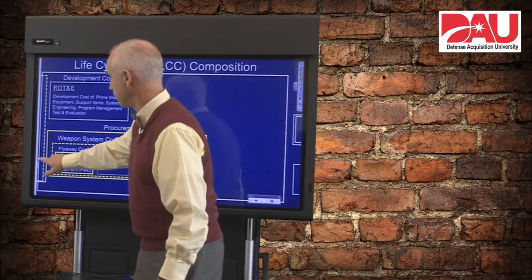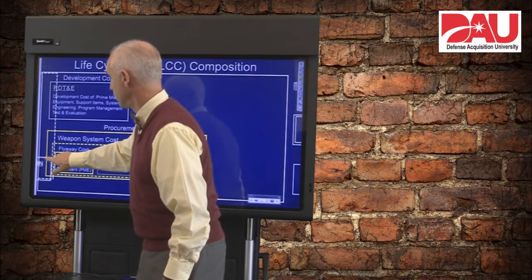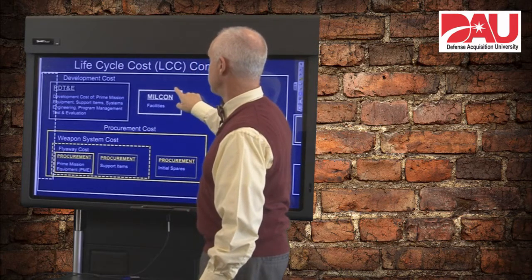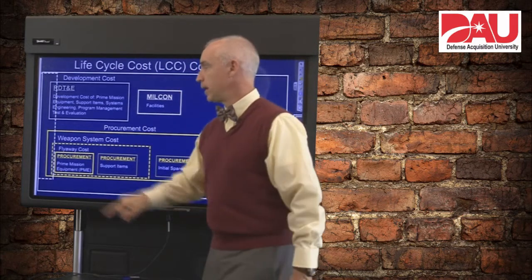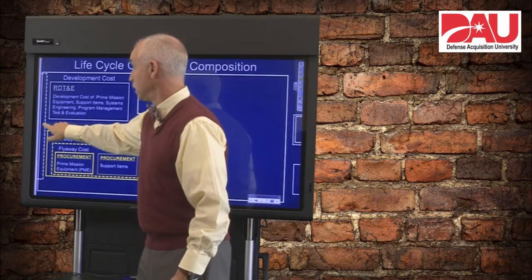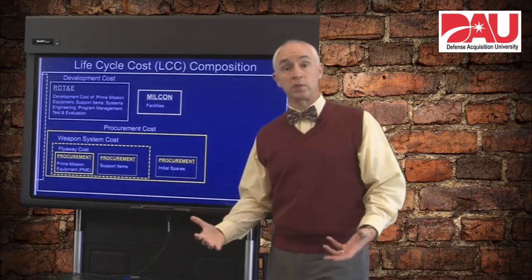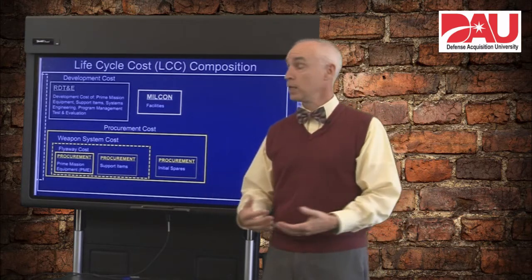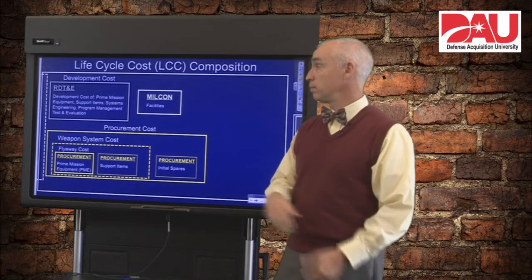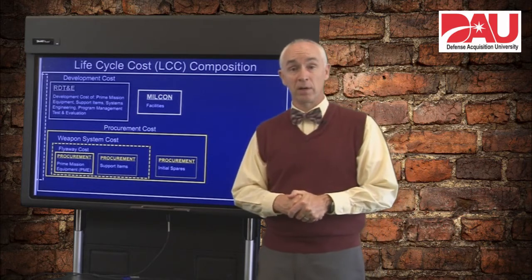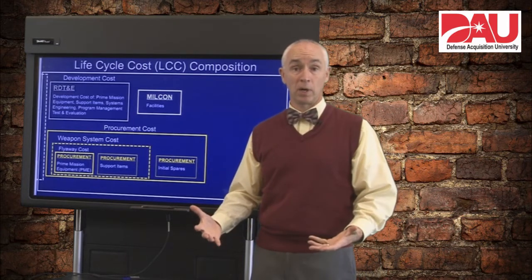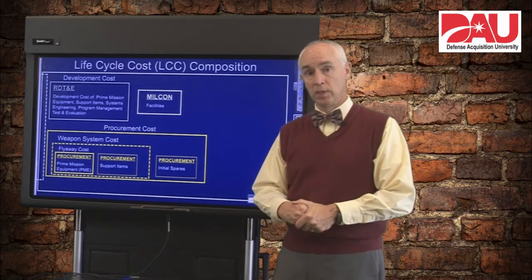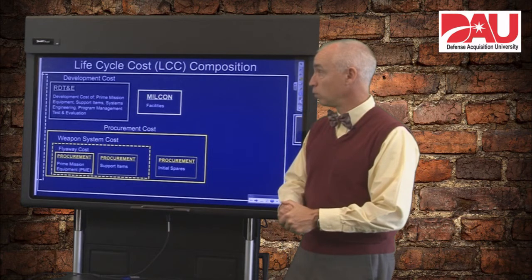Another cost that we have to think about is construction. Do you have to construct any type of facility in order to support the system? It could be hangars, it could be maintenance bays, things like that. If you do, then the appropriate type of money is military construction, or MILCON — that's the appropriation you would use for any major construction you have to do as part of buying your overall system.